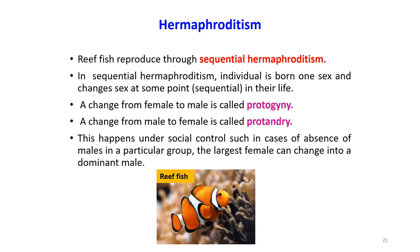The next type is sequential hermaphroditism, in which an individual is born with one sex and changes sex at some point in their life. A change from female to male is called protandry, and a change from male to female is called protogyny. This happens under social control — for example, in the absence of males in a group, the largest female can change into a dominant male. This is common among reef fish.